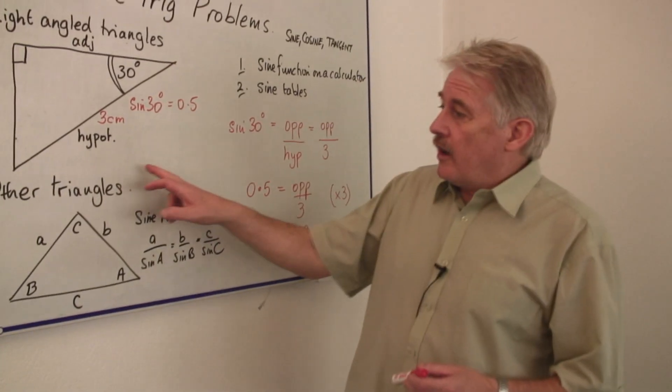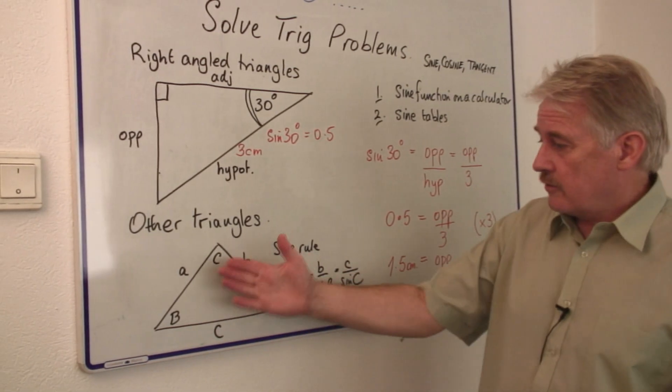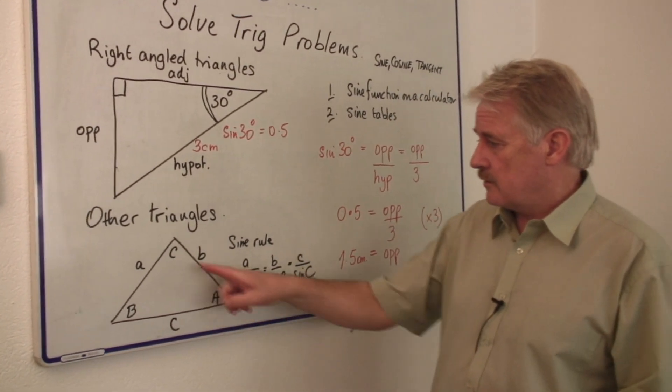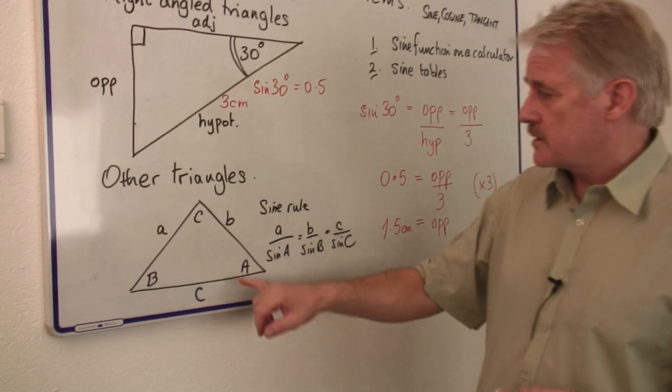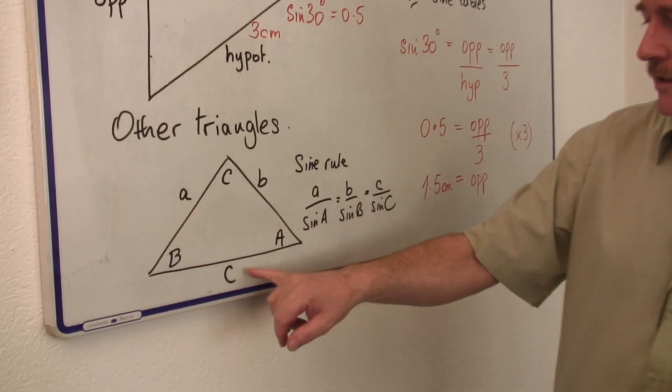Now with other triangles that don't have a right angle in, we've got angles A, B, and C, and sides little a, little b, and little c.